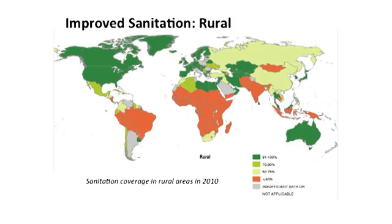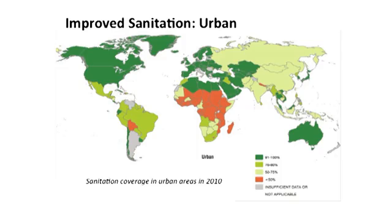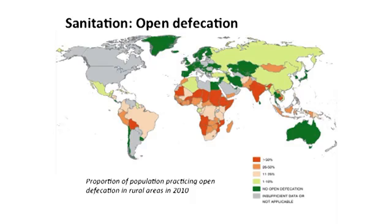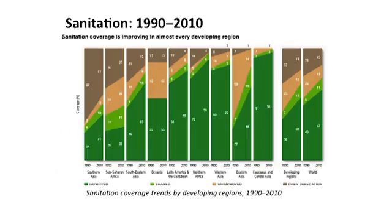Looking at improved sanitation just in urban areas, the hotspots for low coverage are sub-Saharan Africa and Bolivia. But importantly, urban areas in South Asia and East Asia still have a long way to go — there are millions of people in urban South Asia and East Asia that still lack adequate sanitation facilities. This next slide shows where open defecation is still occurring globally, which is the most extreme sanitation problem. The map shows that open defecation is still widely practiced in South Asia and sub-Saharan Africa.